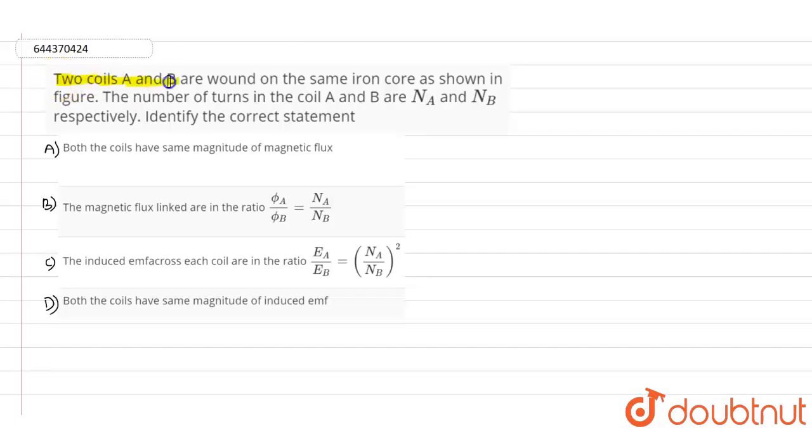So guys, in this question it is given that two coils A and B are wound on the same iron core as shown in the figure. The number of turns in coil A and coil B are N_A and N_B respectively. Identify the correct statement out of these four options.